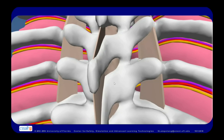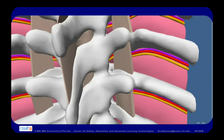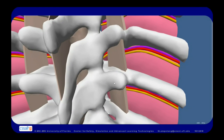If we look from slightly a different angle, we can see these boundaries again. This is the paravertebral space. This is the superior costo-transverse ligament, and this ligament spans from the transverse process above to the rib below.